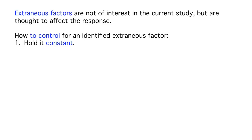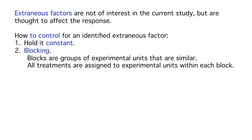The second method of controlling for extraneous factors is to use blocking. A block is a group of experimental units that are similar in the extraneous factor, and all treatments are randomly assigned to experimental units within each block. If we wanted to study the effects of the vaccine and include different age groups which might have a differential response, we can treat age group as a block and randomly assign treatments within each age group, so that in each age group we have subjects who both receive the vaccine and do not receive the vaccine.